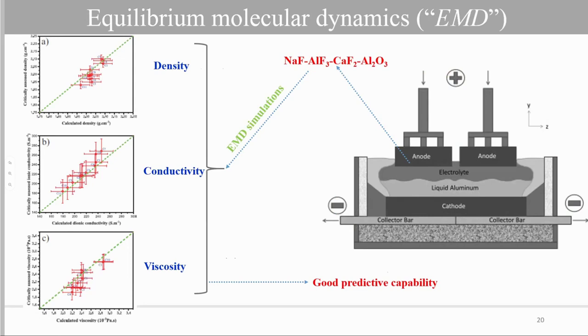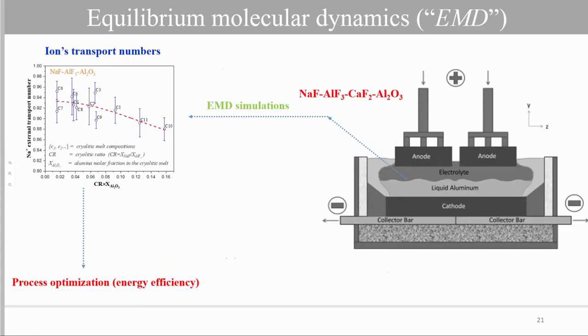So why should we calculate properties already available in the literature? Just to validate the potential and the methodology. However, we can also predict several properties which are not available in the literature. For example, the ionic ion transport numbers, which are very important to represent the energy efficiency in the cells. From the simulation, from the EMD simulation, we have calculated ion transport numbers within the bath, within the electrolyte, in order to optimize the energy efficiency of the cell.